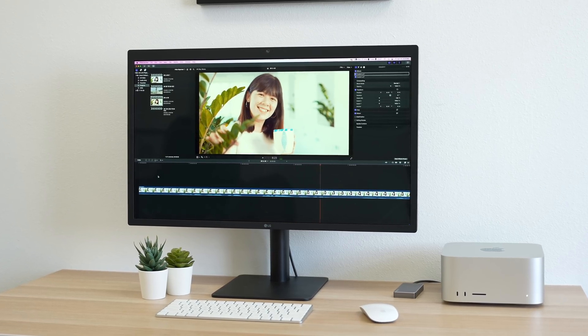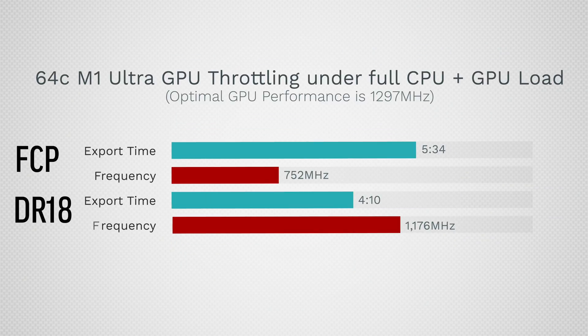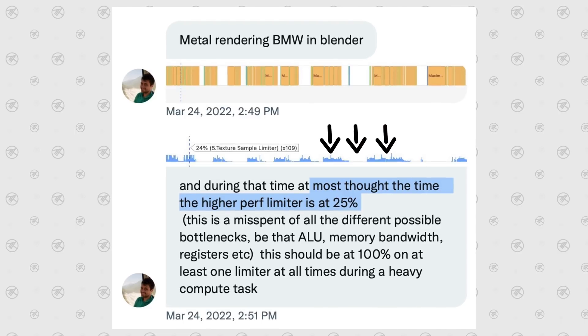Even DaVinci Resolve is not fully optimized yet. The GPU is actually underclocking itself because it's not receiving data properly — there's a big bottleneck, like a funnel with a small opening, and the GPU slows down and uses very little wattage. In the latest DaVinci Resolve, the 64-core model runs at about 1100 MHz instead of the proper 1300 MHz. Final Cut still runs at about 752 MHz, showing even Apple can't optimize for these high-end GPUs. In Xcode's tools, for something like Blender, the GPU shows 100% usage but is sitting idle half the time.